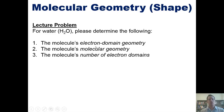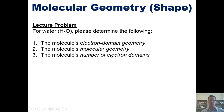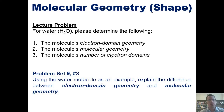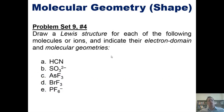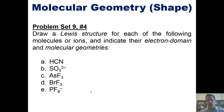Here's a practice problem for water (H₂O): determine its electron domain geometry (counting lone pairs), its molecular geometry (counting only atoms), and its number of electron domains. Pause the video and try to figure out the answer on your own. There's also a lecture problem asking you to draw the Lewis structure for several molecules or ions and indicate their electron domain and molecular geometries — I'll post a link to a separate video where I work through some of those examples.